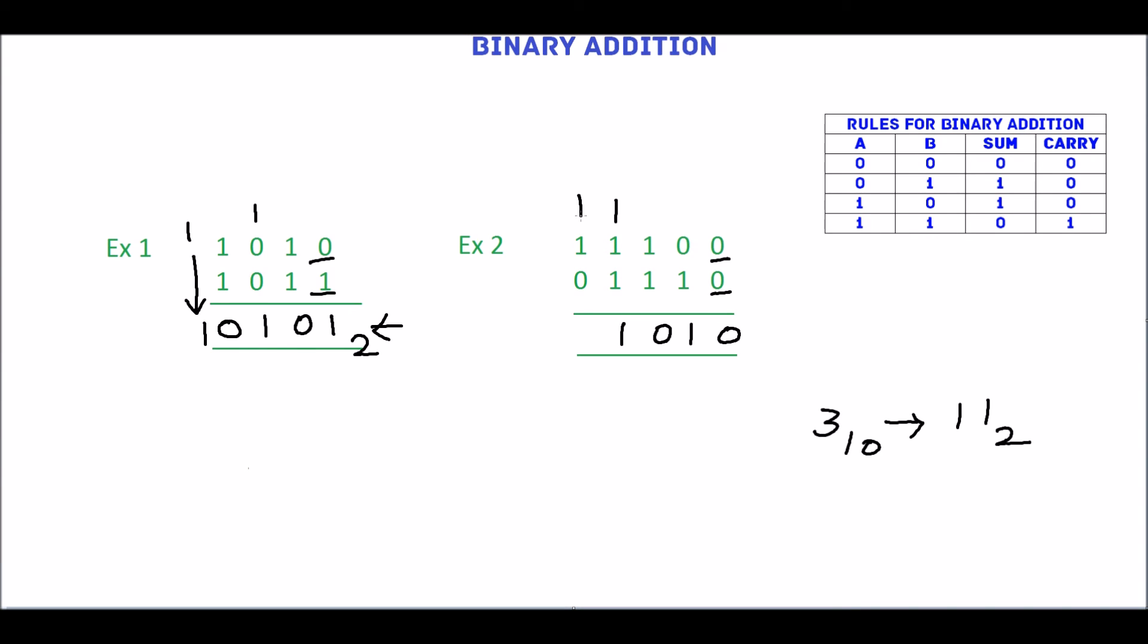1 plus 1 is 10. In this sum is 0. Carry is 1. Write carry as it is. 10, 10, 10 is the sum of the above two binary numbers.